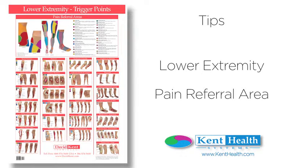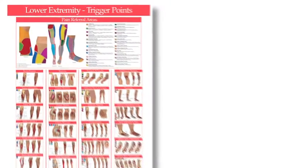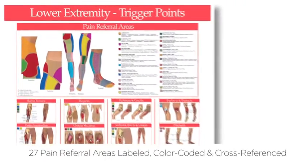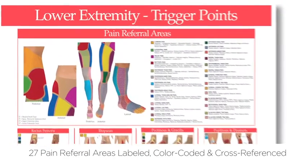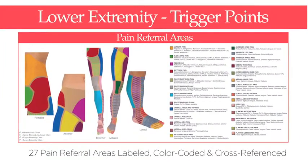Here are a few tips about the pain referral area section on the lower extremity trigger point chart. The lower extremity is divided into 27 pain referral areas that are labeled, color-coded, and cross-referenced.